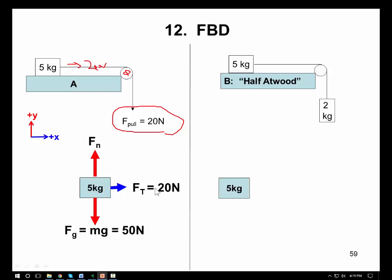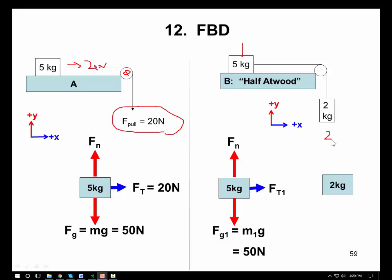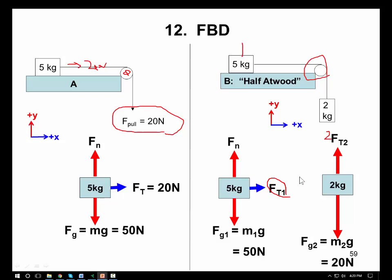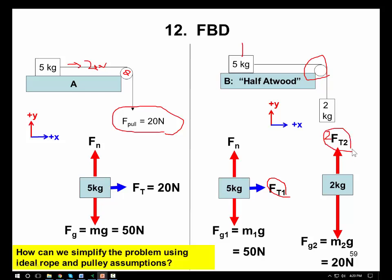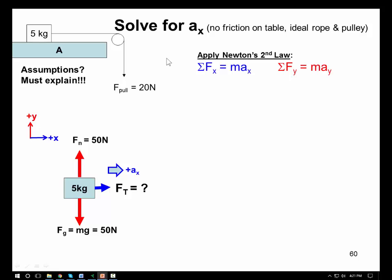In Scenario B, we have two blocks, so we draw a free body diagram for each. Using the same axes, gravity and normal force act on the 5-kilogram block with a tension force pulling to the right. The 2-kilogram block has gravity acting as our 20-newton pulling force. Because the pulley is massless and frictionless, there's no binding from friction and no need to accelerate the pulley's mass, so tension is constant throughout, meaning FT1 and FT2 are the same.